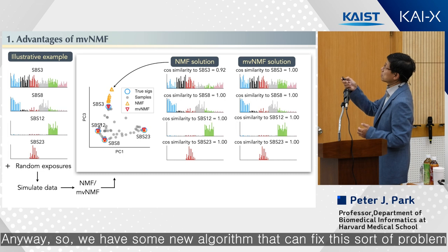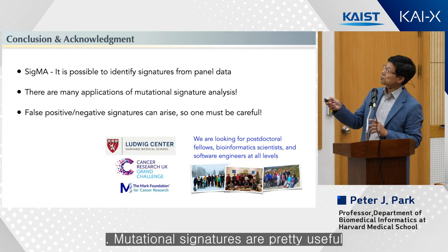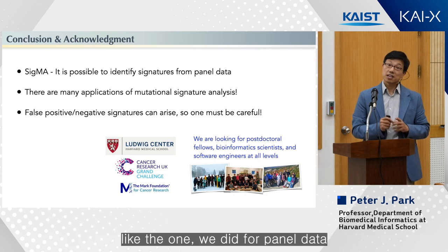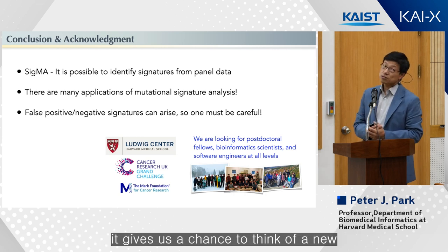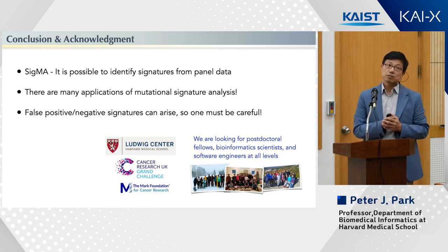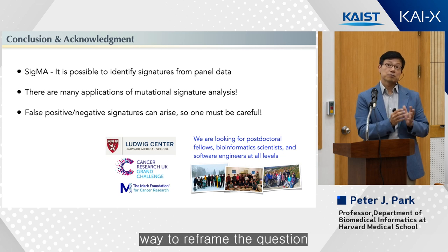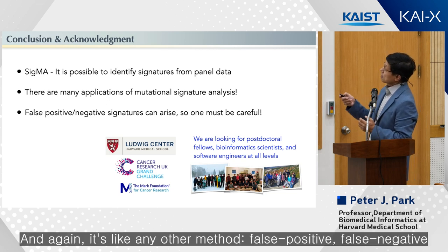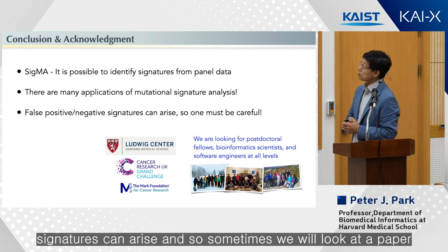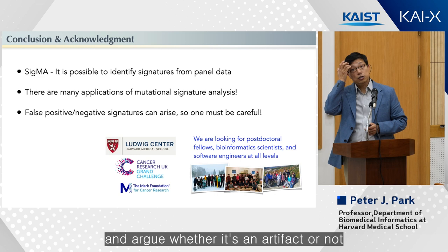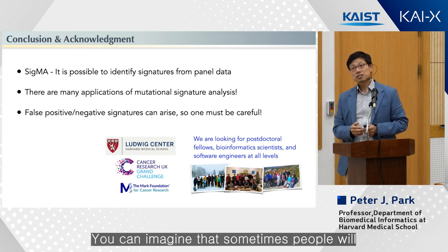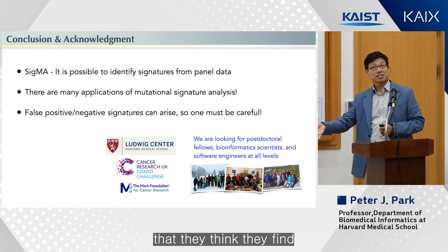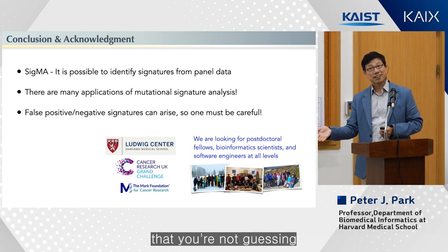We have a new algorithm that can fix this sort of problem. Statistical mutational signatures analysis is pretty useful, and if you identify an interesting problem like panel data, it gives us a chance to reframe the question so we can do something useful. Like any other method, false positive and false negative signatures can arise. Sometimes you'll look at a paper and argue whether a signature is an artifact or not. You can imagine that sometimes people will want to give a therapy based on some signature they think they find — so you really want to be sure that it's there and that you're not guessing.